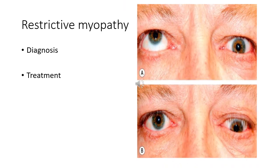Restrictive myopathy affects 30–50% of patients with thyroid eye disease, causing ophthalmoplegia that may be permanent. Ocular motility is restricted initially by inflammatory edema in the congestive phase and later by fibrosis in the quiescent phase. Intraocular pressure may increase in upgaze due to compression by a fibrotic inferior rectus. Motility defects include: elevation defect from fibrotic inferior rectus; abduction defect from fibrotic medial rectus; depression defect from fibrotic superior rectus; and adduction defect from fibrotic lateral rectus.